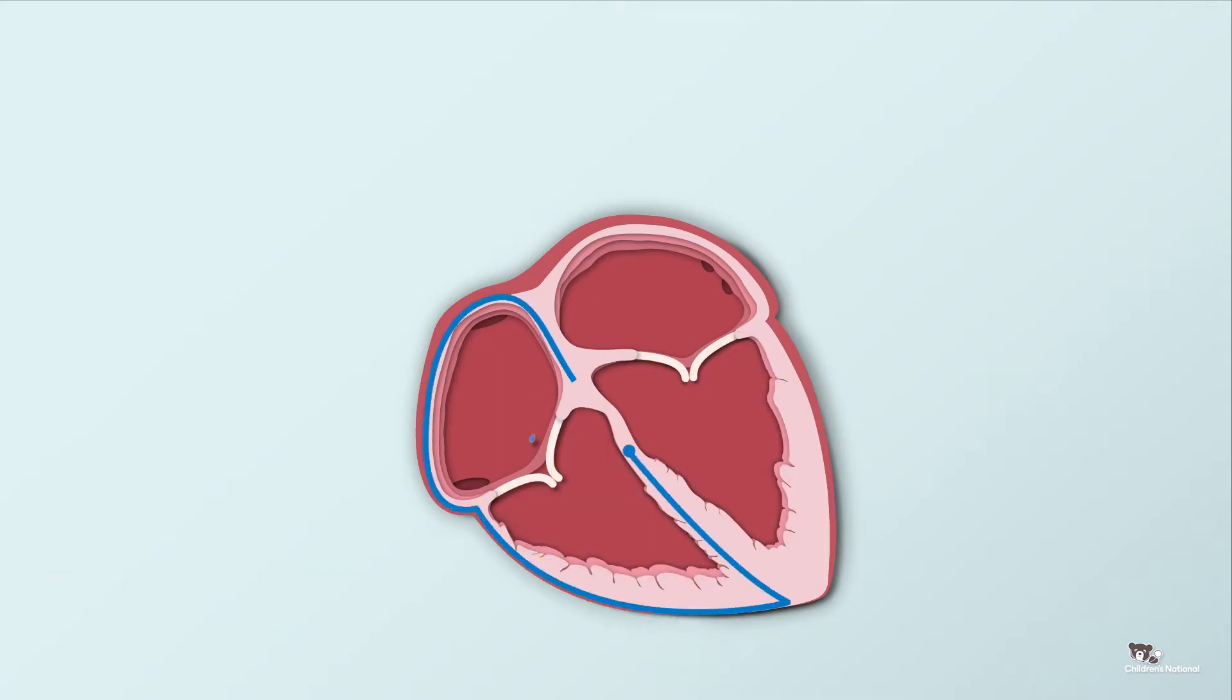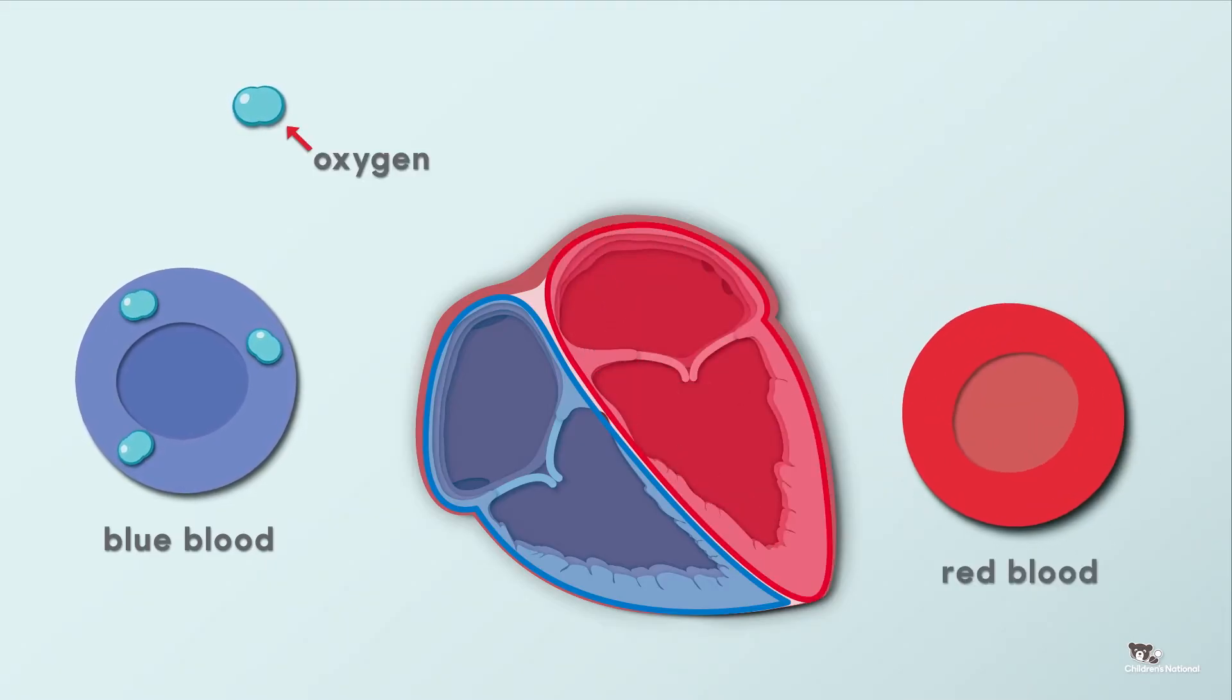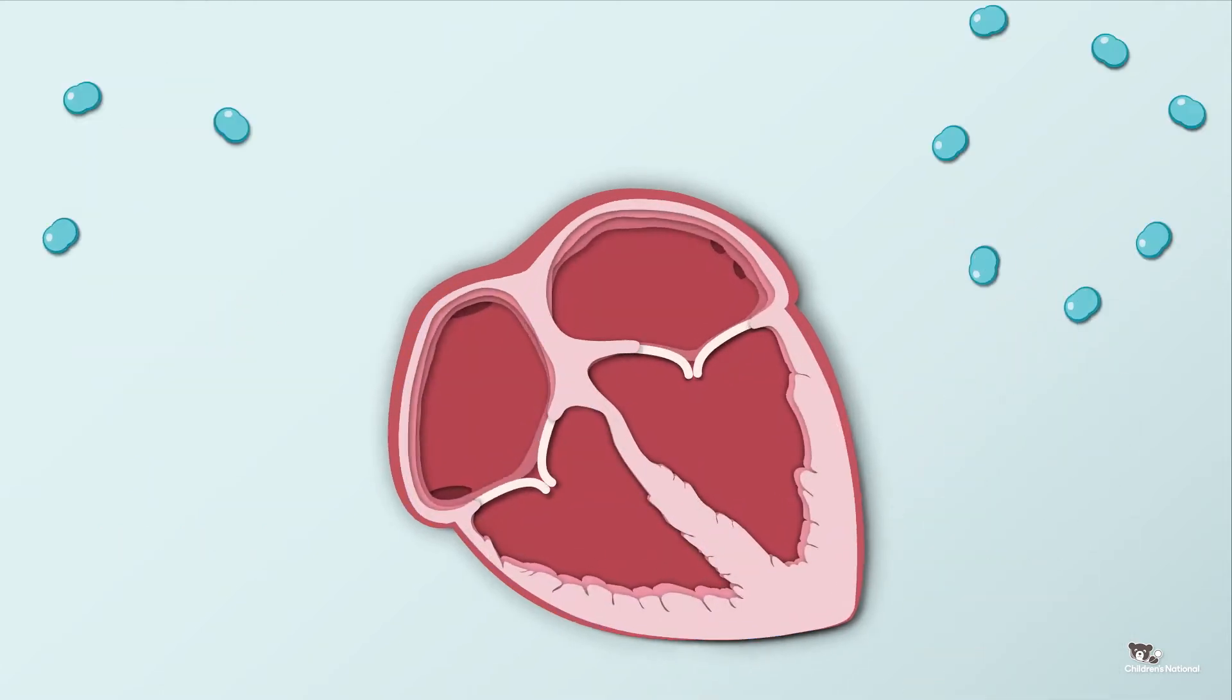The right side of the heart moves blue blood that has a little bit of oxygen, and the left side of the heart moves red blood that has a lot of oxygen. The body needs oxygen in our blood to work.